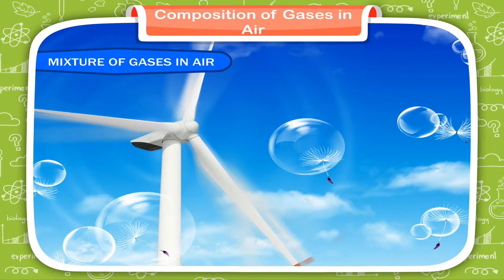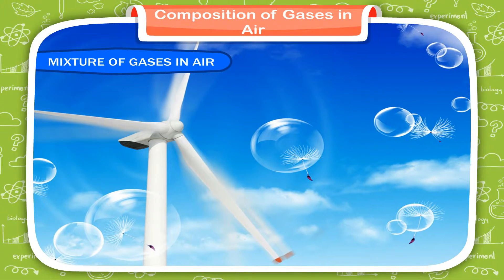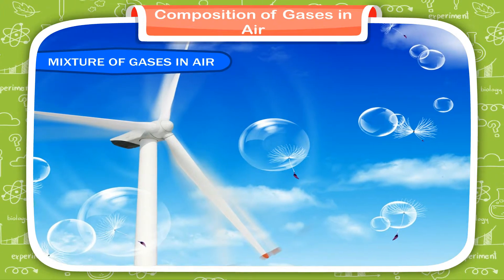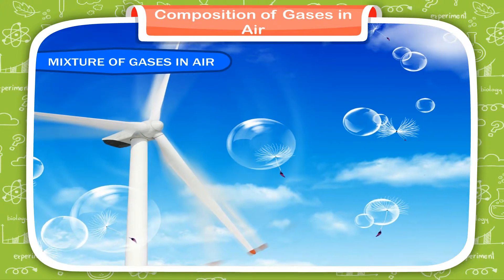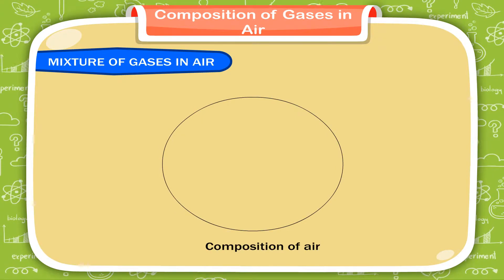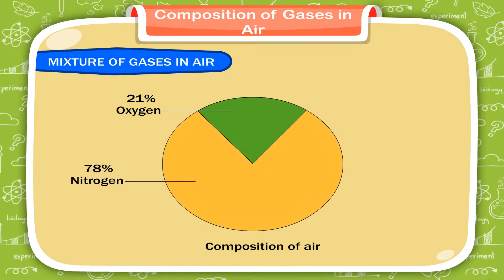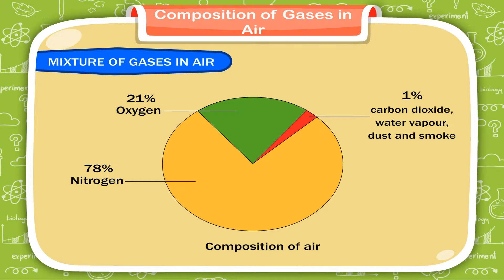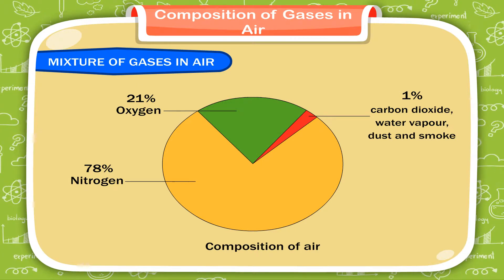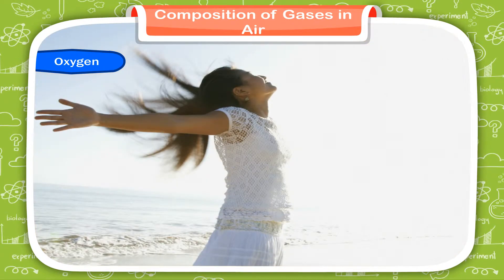Mixture of gases in air. Air is a mixture of gases. It is not made up of any single element. The composition of air varies from place to place. The major constituents are Oxygen, Nitrogen, Carbon Dioxide, Water Vapour, Dust and Smoke.